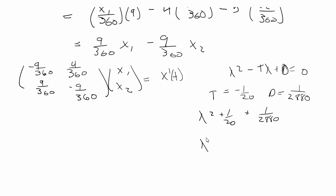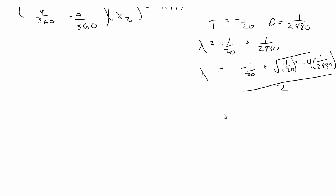So our characteristic equation is lambda squared plus 1 over 20 plus 1 over 2880. Using the quadratic equation, we're going to get lambda equal to negative 1 over 20 plus or minus square root of 1 over 20 squared minus 4 times 1 times 1 over 2880 all over 2. So this will give us the two values of lambda.